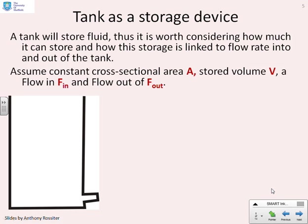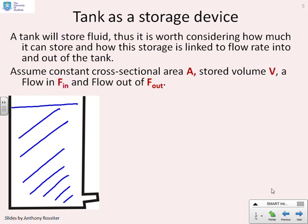Let's now look at a tank as a storage device. Clearly, when you have a tank, it can store fluid. Depending on the size of the tank, lots of fluid or perhaps a little bit of fluid. Now the rate at which the storage is changed is linked to the flow rate into and out of the tanks. If you've got a fast flow rate, the storage changes quickly. A slow flow rate, the storage changes slowly.